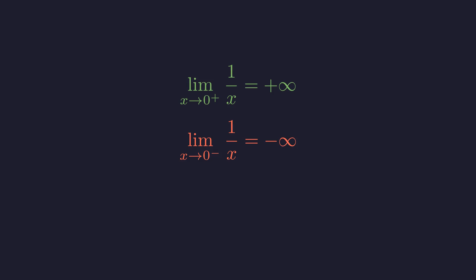The limit as x approaches zero from the left is negative infinity. Same function, opposite direction, completely different result. Here's the critical insight: for a limit to exist at a point, the result must be the same from both directions.